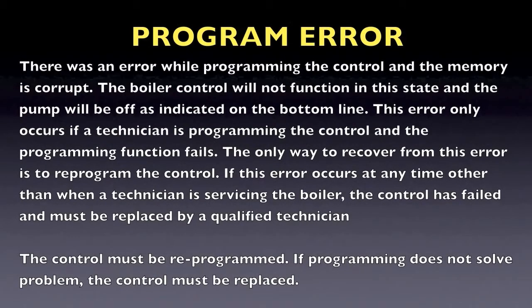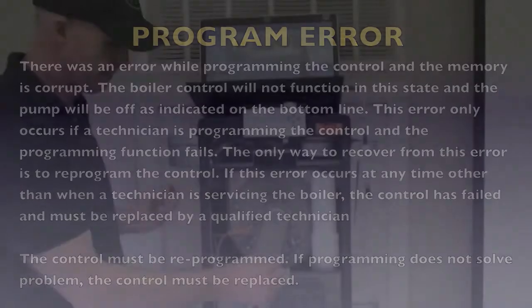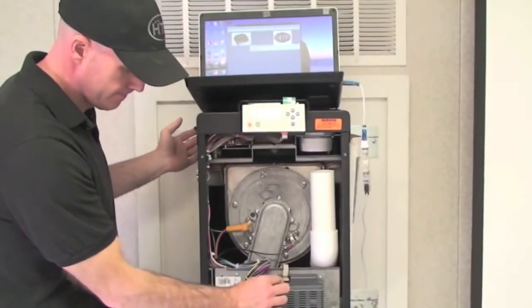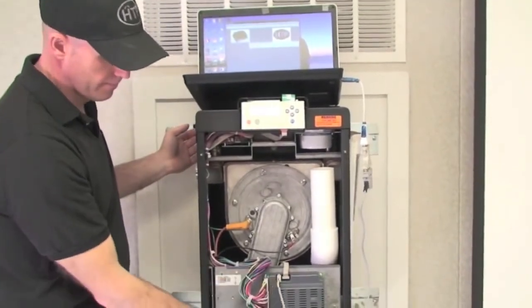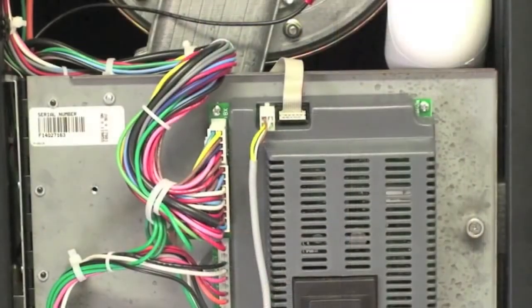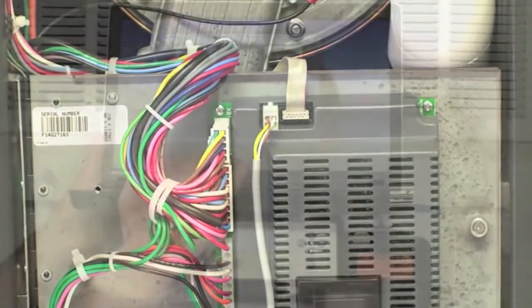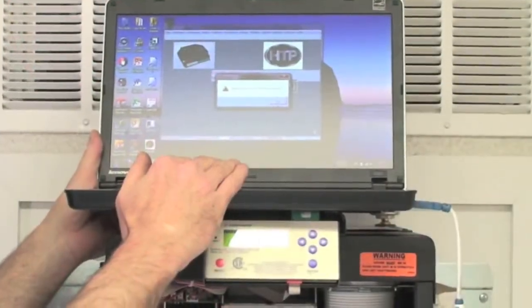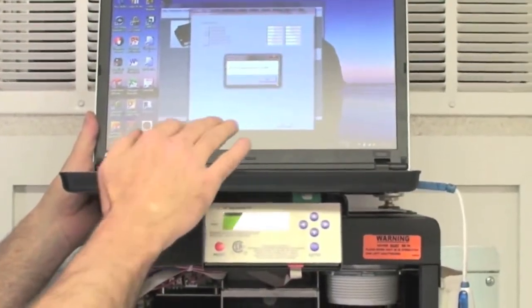The boiler control will not function in this state and the pump will be off as indicated on the bottom line. This error only occurs if the technician is programming the control and the programming function fails. The only way to recover from this error is to reprogram the control.